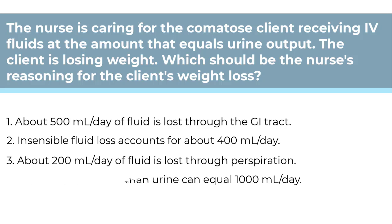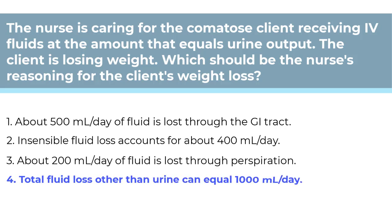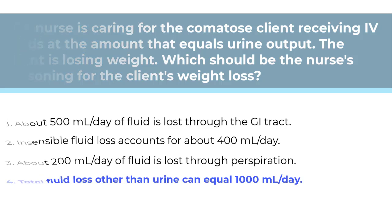Number 4 is the correct answer. Besides urine, body fluid is lost through perspiration, the GI tract, skin, and lungs. This can account for over 1000 mL a day, which is equal to approximately 1 kg or 2.2 pounds. You can eliminate the other answers because the fluid excretion amounts are incorrect — Number 1 and 3 show an excretion higher than reality, and Number 2 is lower.